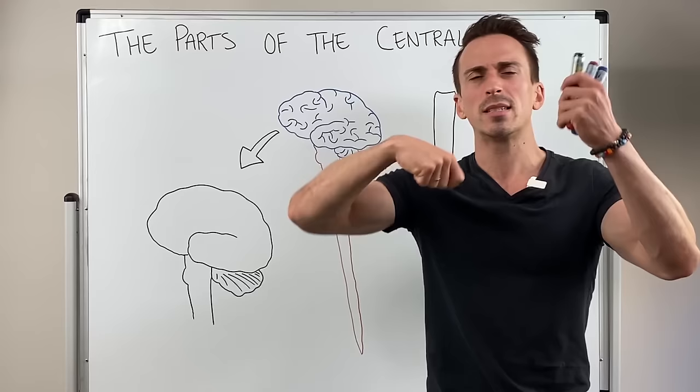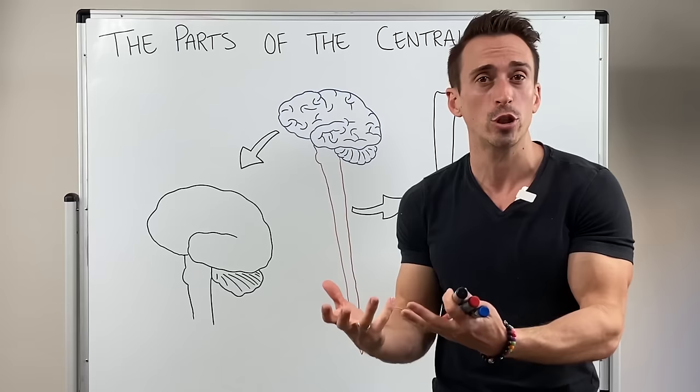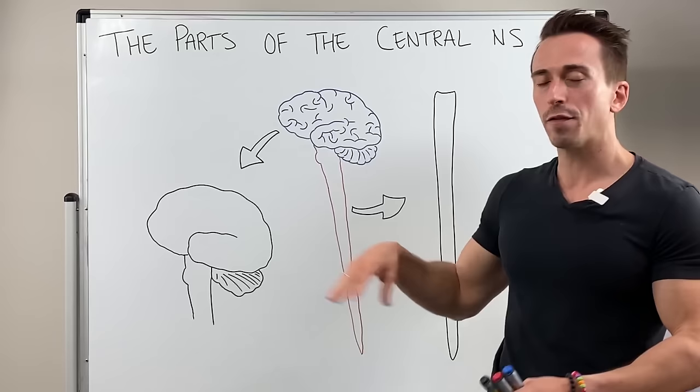We make a decision, we understand what's going on, and then we send a signal out to the various muscles, tissues, or glands of the body in order to have some sort of reaction to those stimuli that are coming in.